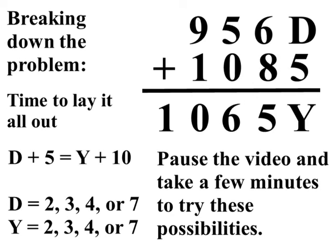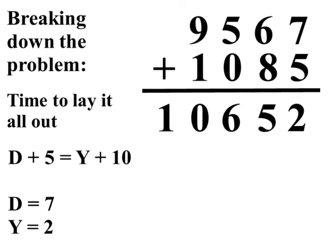And, we know that D plus 5 has got to be greater than 10. Well, the only number that would work for that would be 7. So that gives us D equals 7. 7 plus 5 equals 12. That would make Y equal to 2.